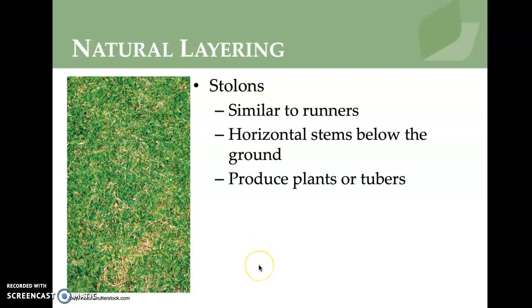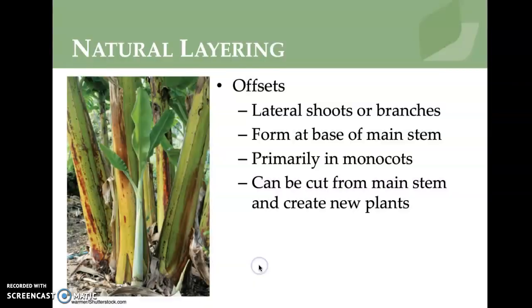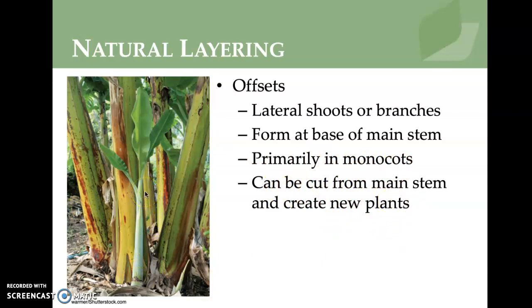Offsets are lateral shoots or branches that form at the base of the main stem. This is primarily found in monocot plants. They can be cut from the main stem to create new plants — for example, what appears to be a banana tree with a baby plant at the base can be carefully dug up, keeping the roots intact, and planted separately.